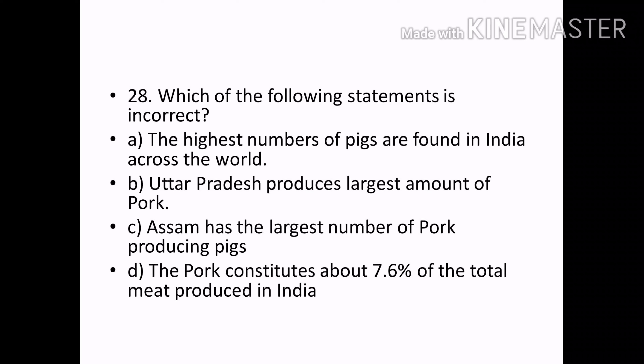Which of the following statement is incorrect? Options — The highest number of pigs are found in India across the world; Uttar Pradesh produces largest amount of pork; Assam has the largest number of pork producing pigs; pork constitutes about 7.6% of total meat produced in India. Correct answer: Option A — Highest number of pigs are found in India across the world (incorrect statement).